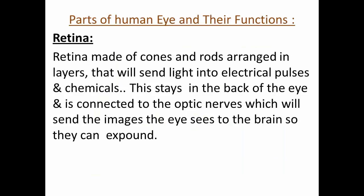Retina. The retina is made of cones and rods arranged in layers, that convert light into electrical pulses and chemicals. It stays in the back of the eye and is connected to the optic nerves, which send the images the eye sees to the brain so they can be interpreted.